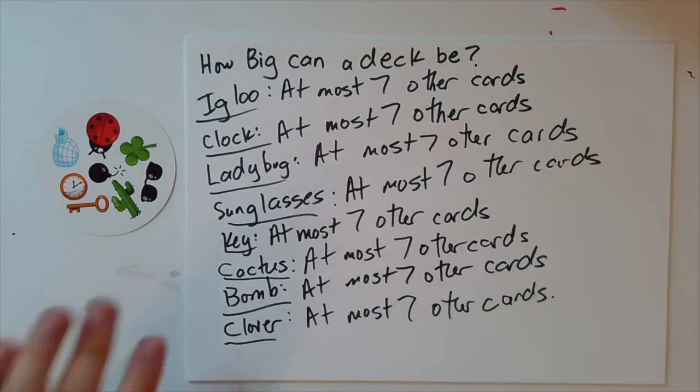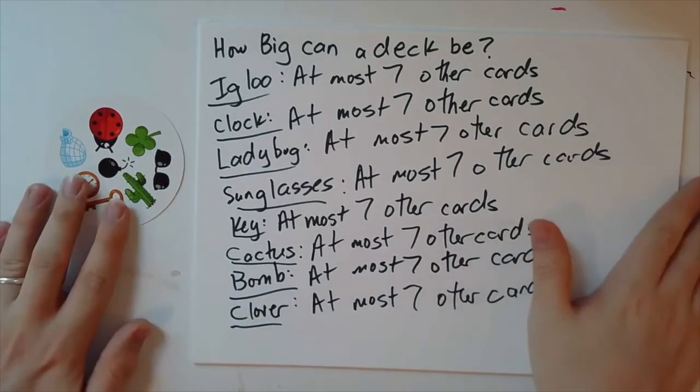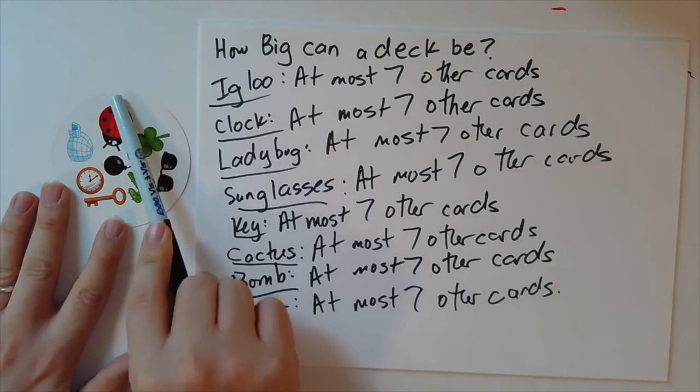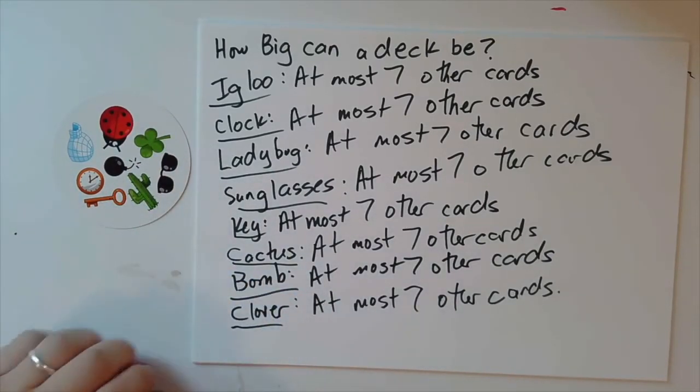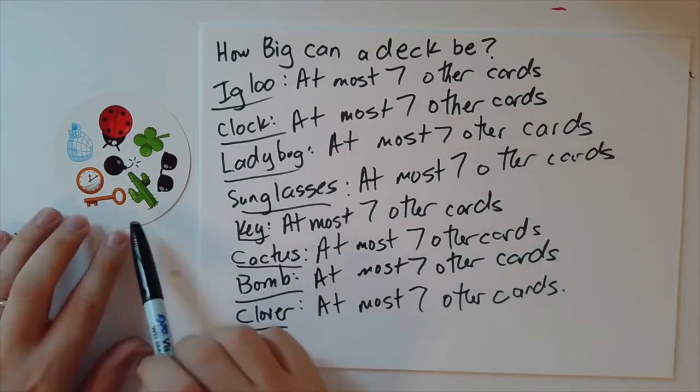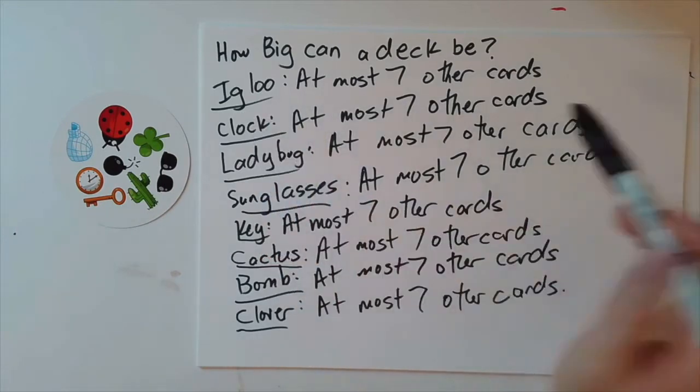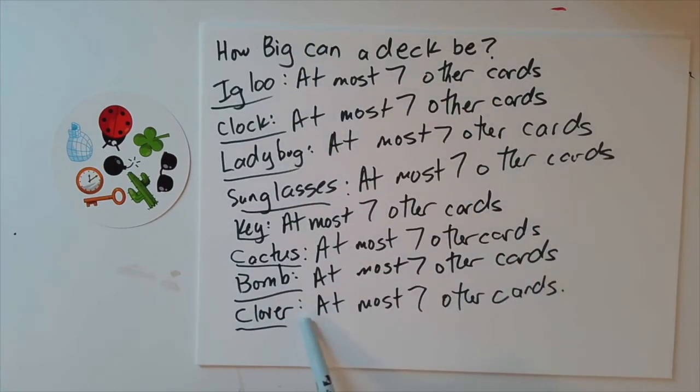Okay. So I've written this out somewhat verbosely, but I want to make sure we're clear that I can go through all eight symbols on this card and apply our little lemma that we just proved that every symbol shows up on at most eight cards. And putting those together tells me symbol by symbol how many cards at most there could be for each of these other symbols.